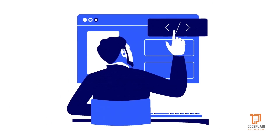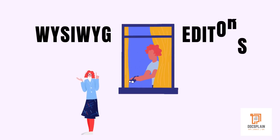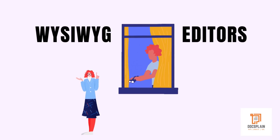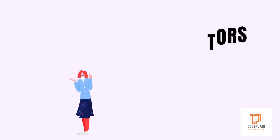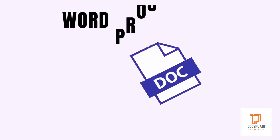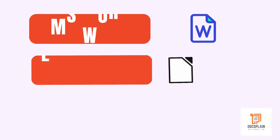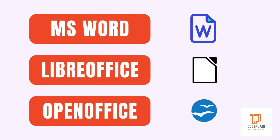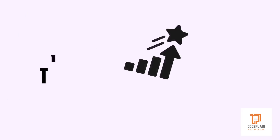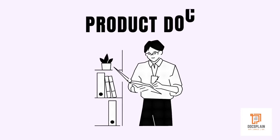During its infancy, an array of markup languages such as DocBook and LinuxDoc shaped up. For a brief moment, WYSIWYG — or what you see is what you get — editors came into existence, but never really became mainstream in technical product documentation. Instead, word processors such as Microsoft Word, OpenOffice, or LibreOffice, that were using typesetting engines to manage document appearance, got readily accepted for product documentation.